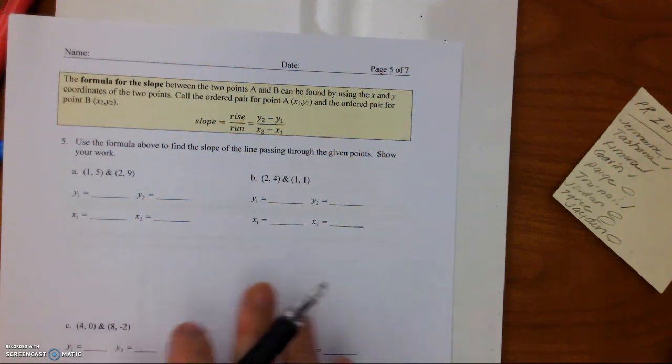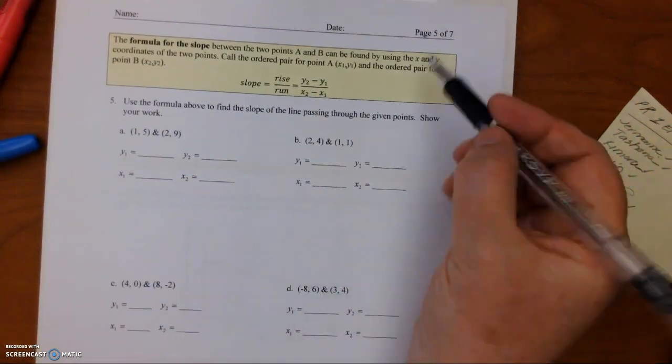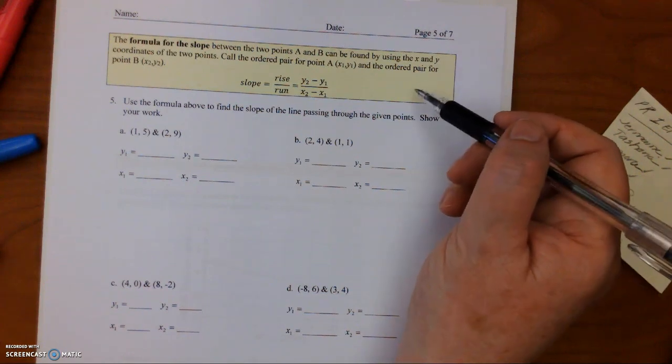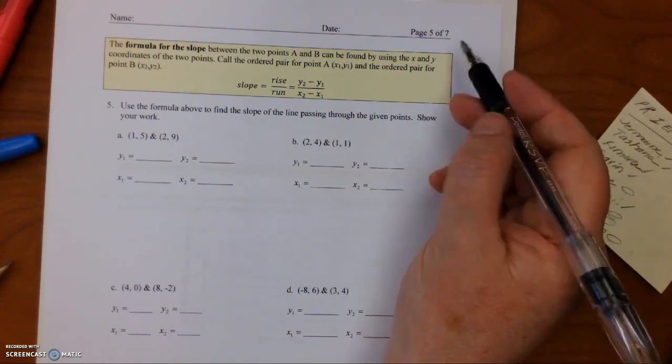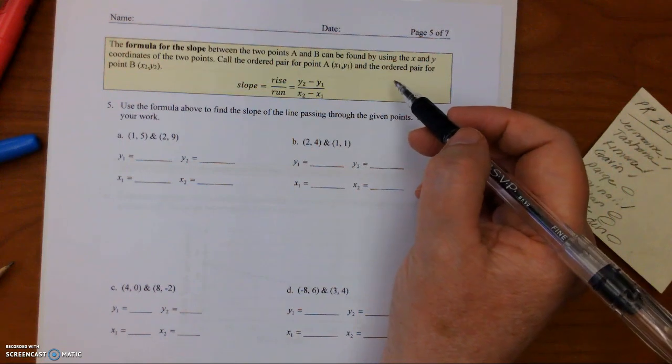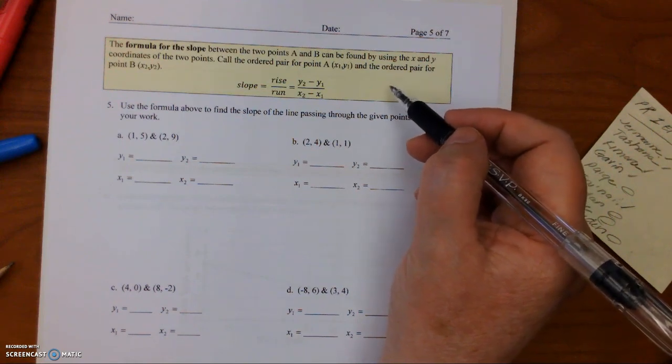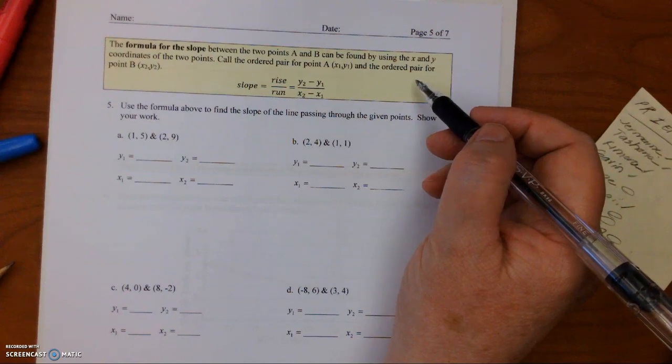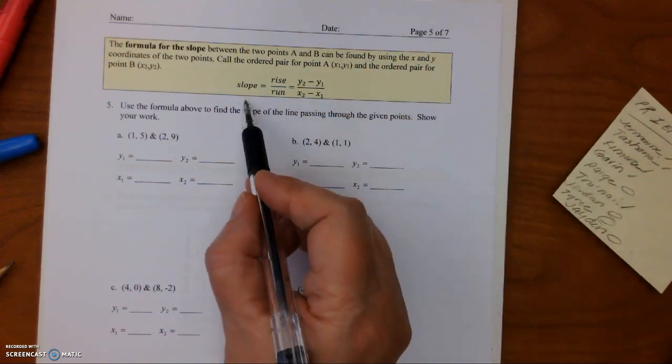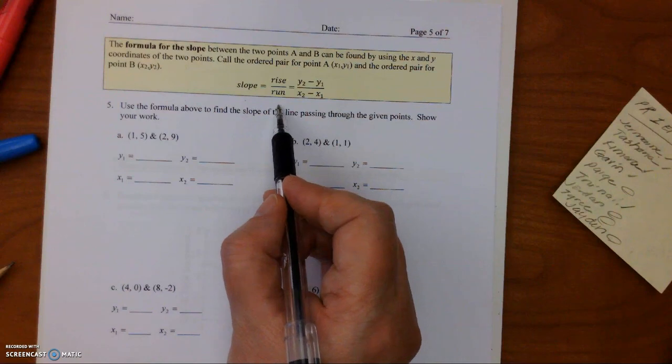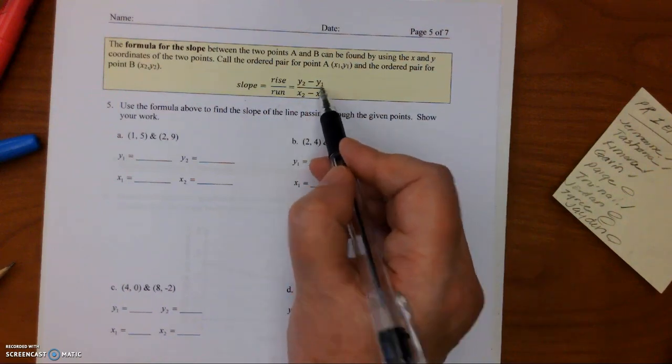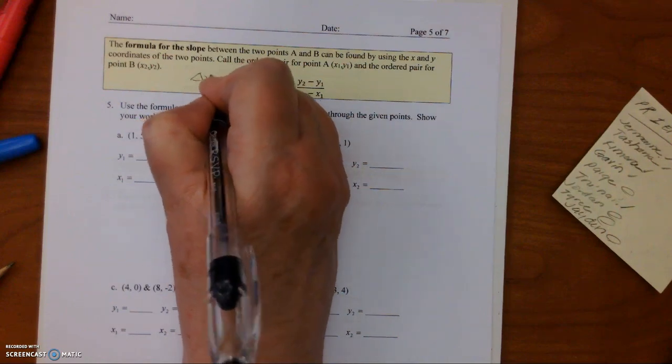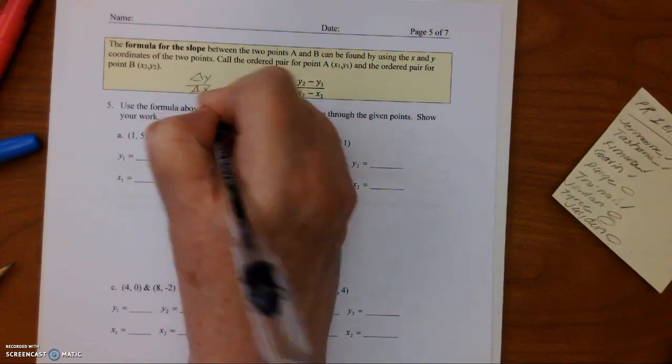The formula for the slope between two points A and B can be found by using the x and y coordinates of the two points. Call the ordered pair for point A x1, y1 and the ordered pair for point B x2, y2. So slope equals rise over run, which is (y2 minus y1) over (x2 minus x1). Remember, it's also change over y, change over x.